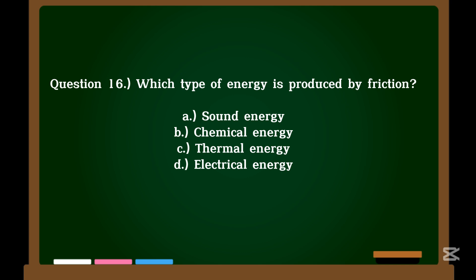Question 16. Which type of energy is produced by friction? A. Sound energy. B. Chemical energy. C. Thermal energy. D. Electrical energy.